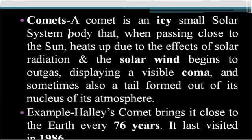A comet is an icy small solar system body that, when passing close to the sun, heats up due to the effects of solar radiation and solar wind, and begins to outgas, displaying a visible coma and sometimes also a tail formed out of its nucleus. When it comes near the sun, it starts to melt and emit gases, and a visible tail or coma appears. For example, Halley's Comet brings it close to Earth every 76 years, and it was last visited in 1986.